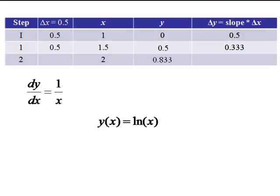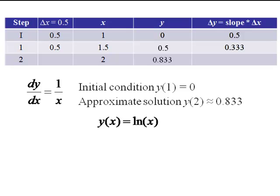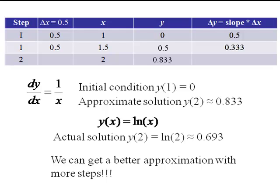Now, the solution to this differential equation is ln of x, because the derivative of ln of x is 1 over x. We also had an initial condition of y of 1 equals 0. So our approximate solution is that y of 2 is about 0.833. Our actual solution is that y of 2 is ln of 2, which is about 0.693, so we're a little bit off. Now we can improve our estimate by taking more steps.